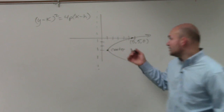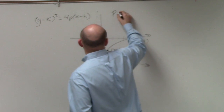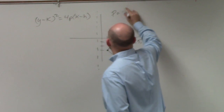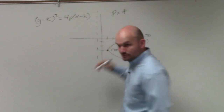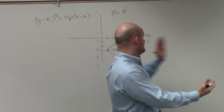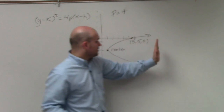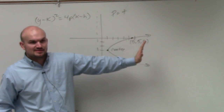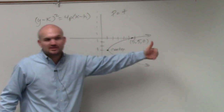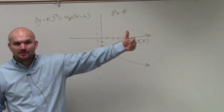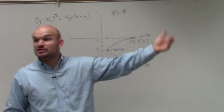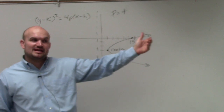The other thing I know is about p. I don't know the value of p, but I know p is positive. If it's opening up to the right, we know that the distance to our focus is going to be positive. So that's just a good thing — I'm going to write that down, because when I'm doing my problem, I want to make sure I check my answer and make sure it makes sense.